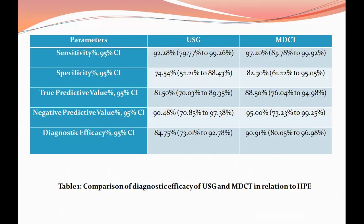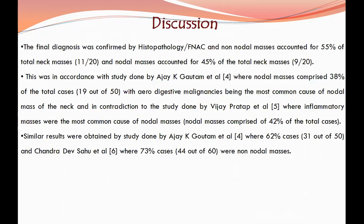Comparison of the diagnostic efficacy of USG and CT was done relative to histopathological examination. USG had a sensitivity of 92%, specificity of 74.5%, positive predictive value of 81.5%, negative predictive value of 90.4%, and diagnostic efficacy of 84.7%. CT had a sensitivity of 97.2%, specificity of 82.3%, positive predictive value of 88.5%, negative predictive value of 95%, and diagnostic efficacy of 90.9%. Final diagnosis was confirmed by histopathology or FNAC, with non-nodal masses accounting for 55% and nodal masses 45% of total neck masses.